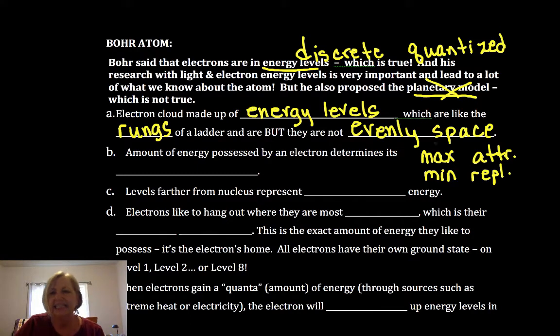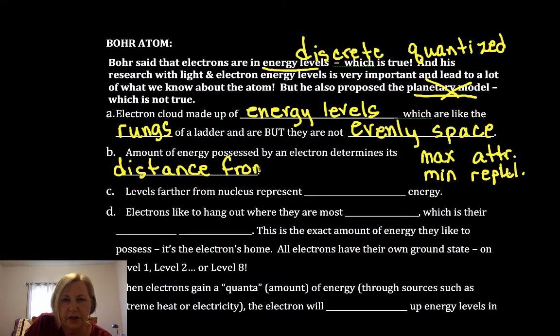And that means that they're going to form these energy levels that are not evenly spaced. The amount of energy possessed by an electron is going to determine or explain to us, provide information about that electron's distance from the nucleus.